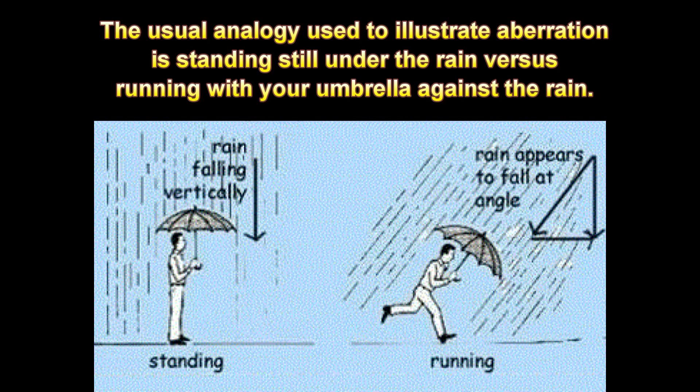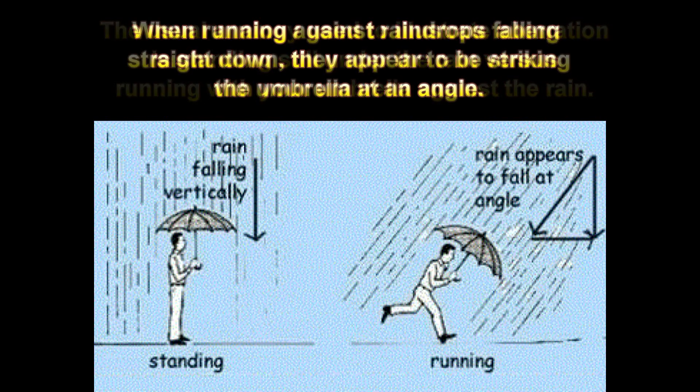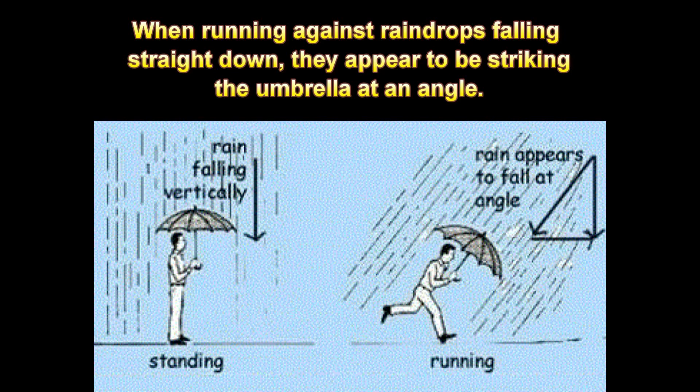The usual analogy used to illustrate aberration is standing still under the rain versus running with your umbrella against the rain. When running against raindrops falling straight down, they appear to be striking the umbrella at an angle.